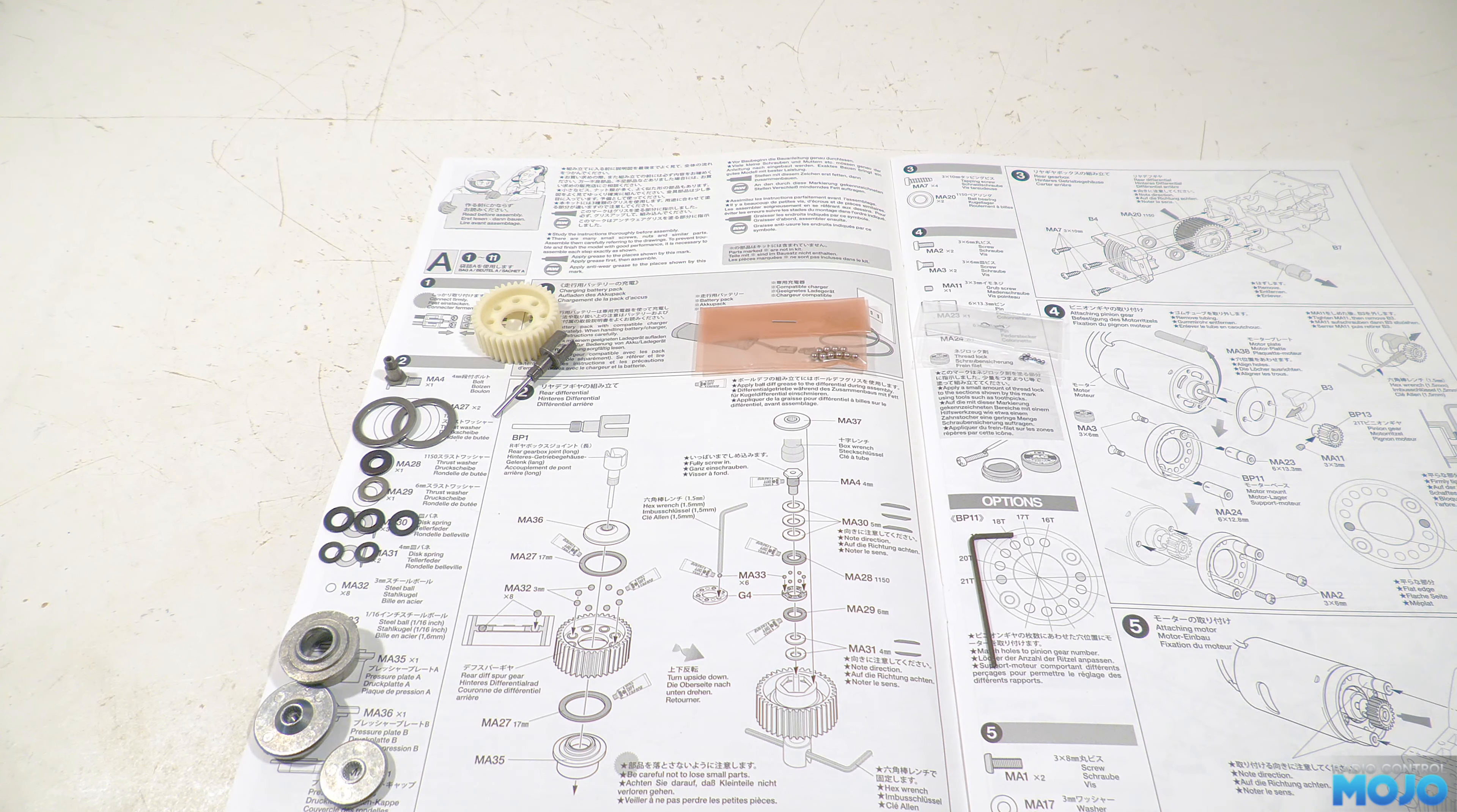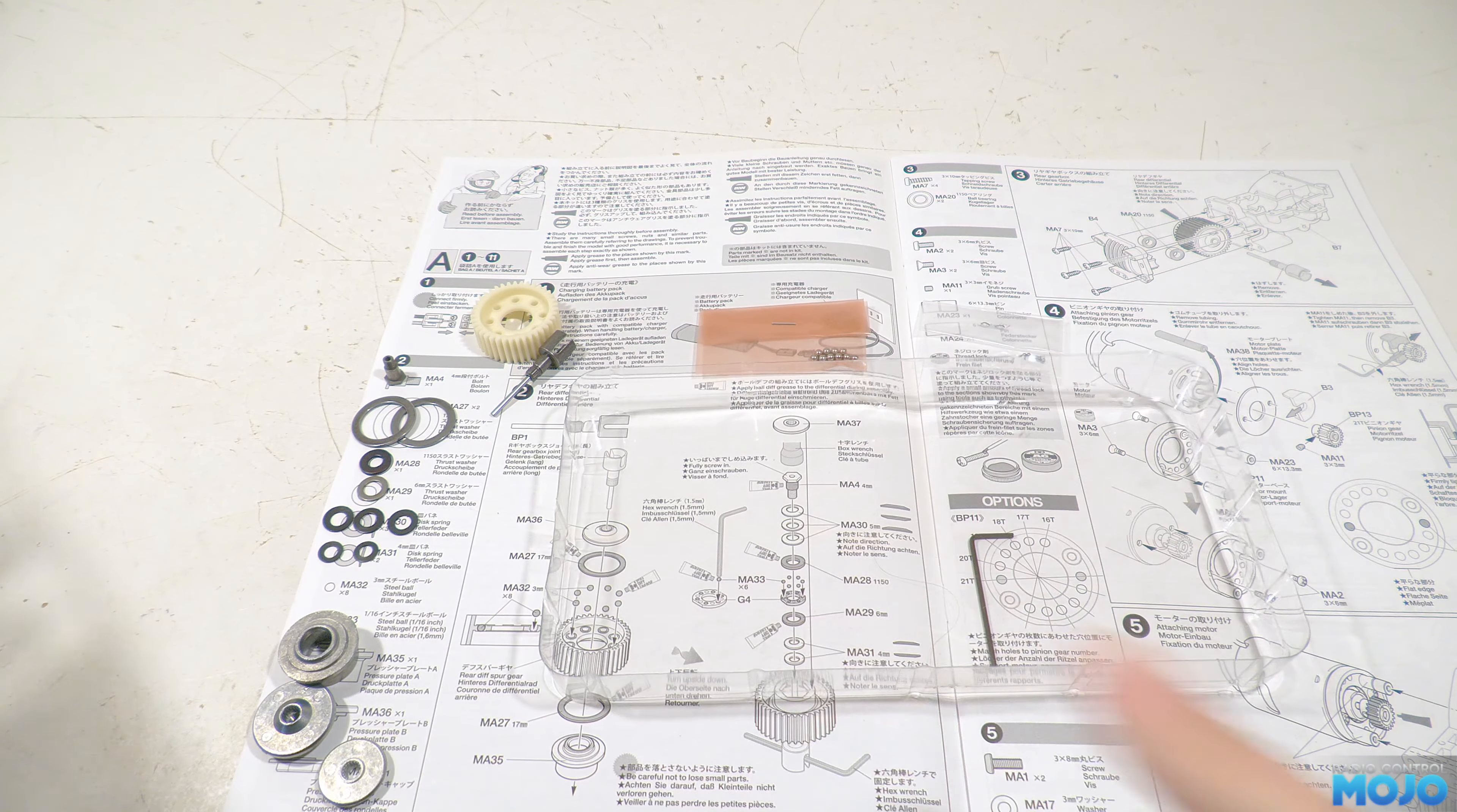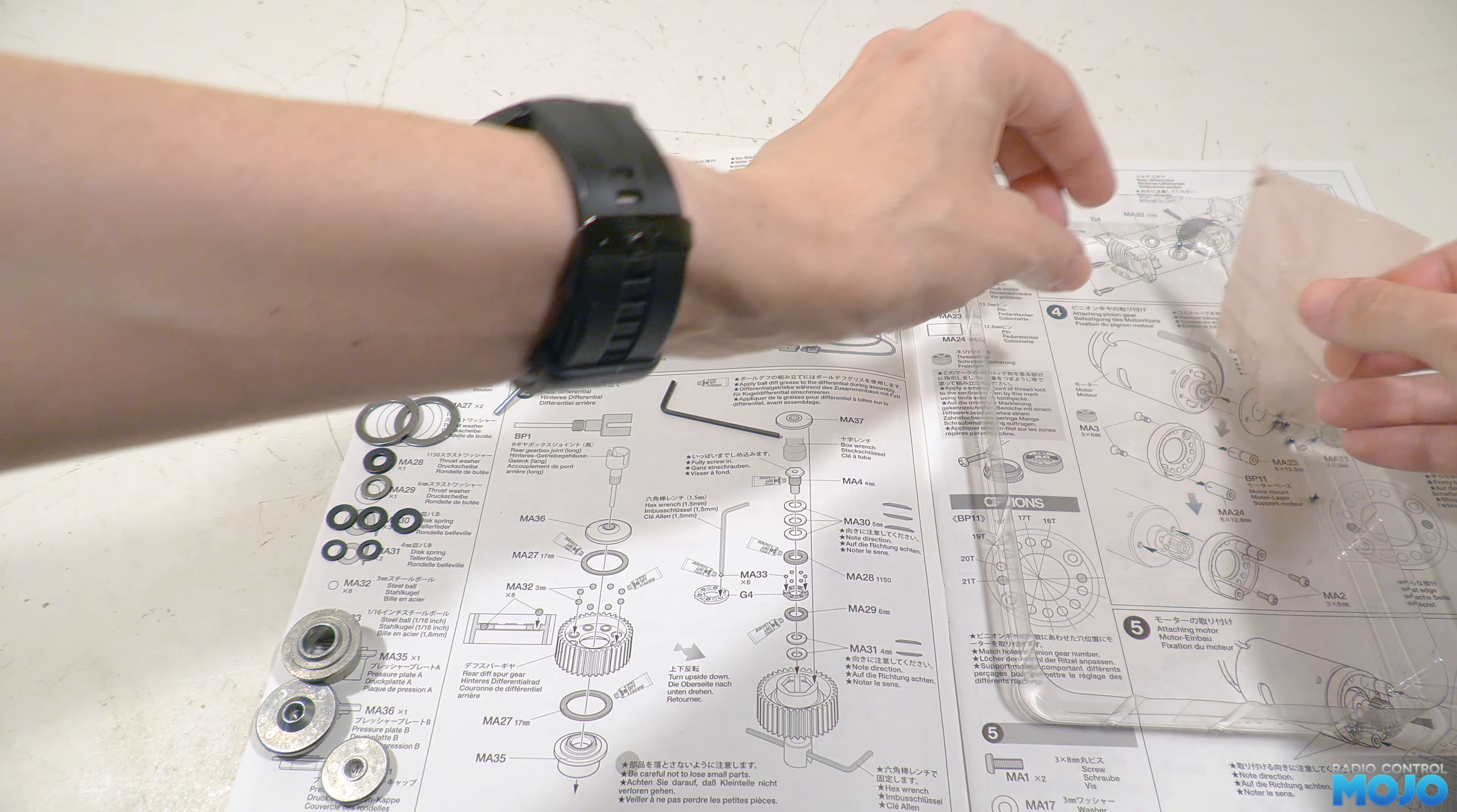So we can get at the balls to transfer them into the holes, we need a small tray to keep them safe. One of the lids of the plastic parts boxes works pretty well. It's a bit big, but the balls won't get lost, which is the main thing. We'll also need the diff grease, so it's ready to go.